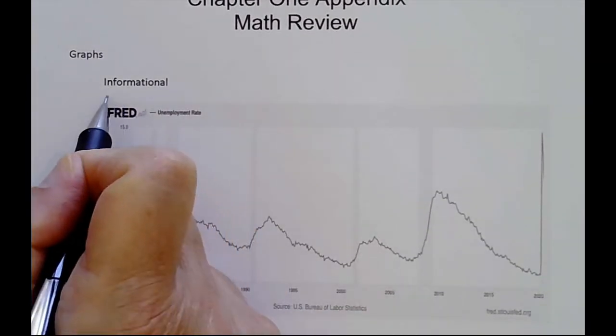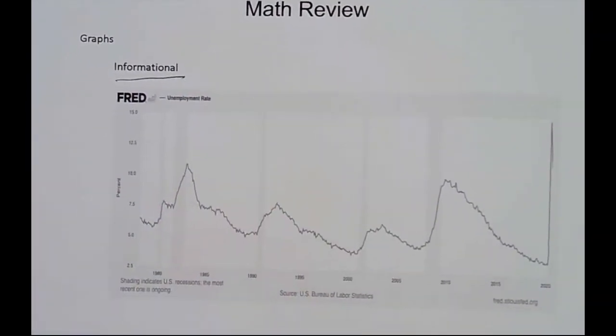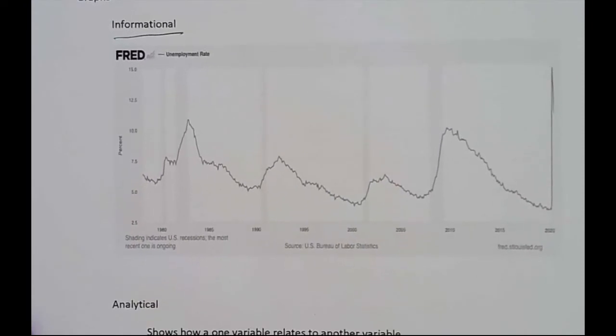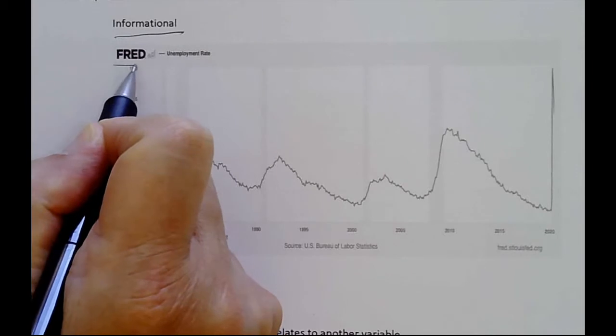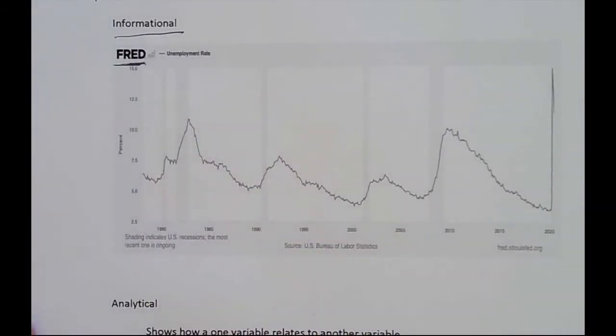We have two kinds of graphs we're going to cover in this class. One is informational graphs, and these just present information. Here's an example. What we have here is the unemployment rate, and this comes from a site called FRED, the Federal Reserve Economic Data, from the St. Louis Federal Reserve Bank.